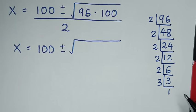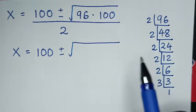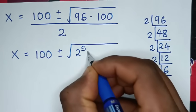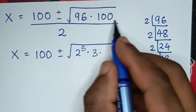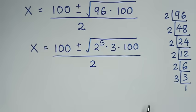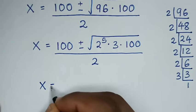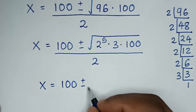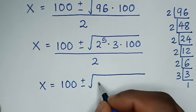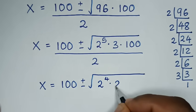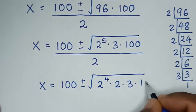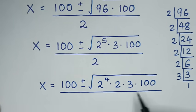So 96 equals 2 to the power of 5 times 3. Therefore x equals 100 plus or minus square root of 2 to the power of 5 times 3 times 100, over 2. We split 2 to the power of 5 into 2 to the power of 4 times 2, so we get square root of 2 to the power of 4, times square root of 100, times square root of 2 times 3.